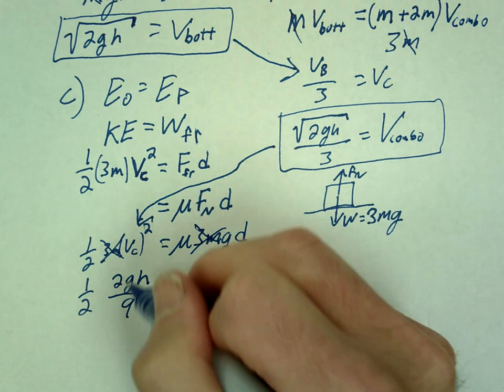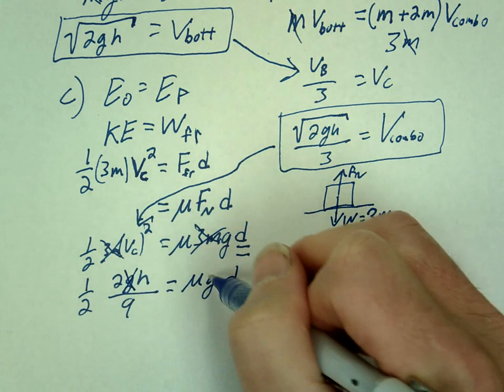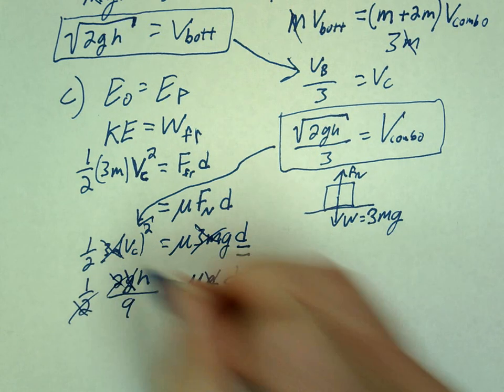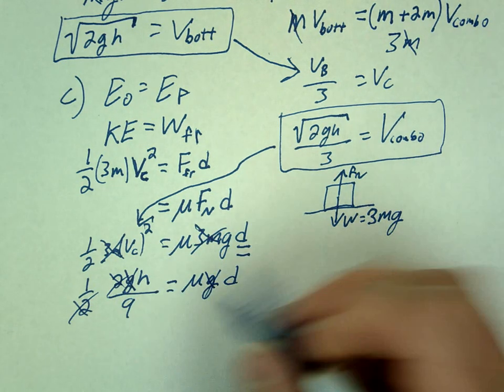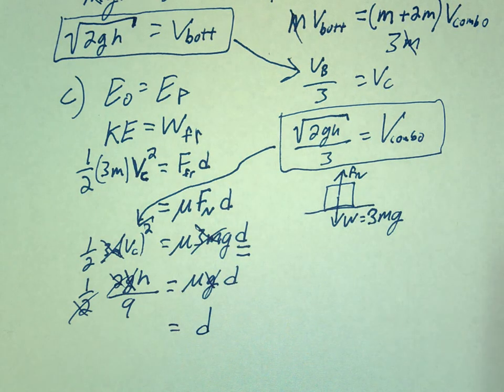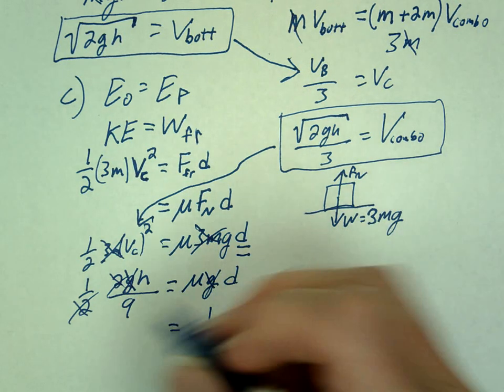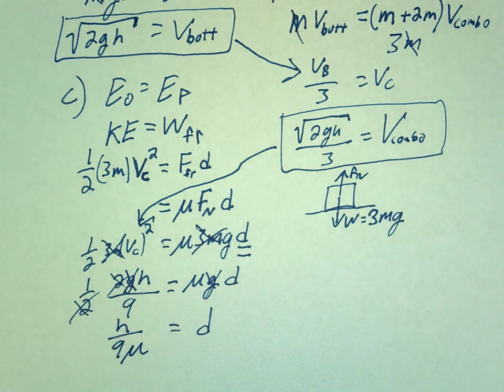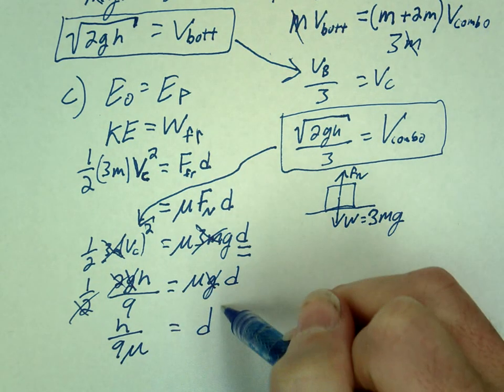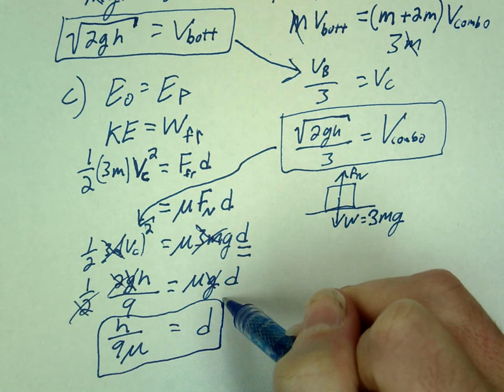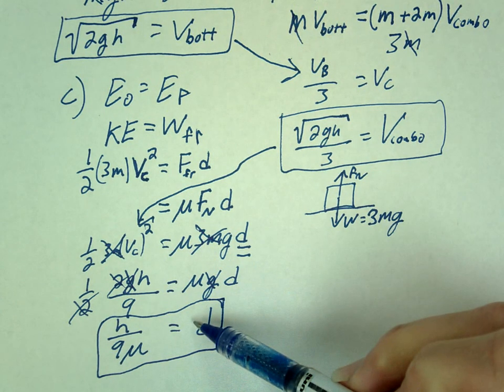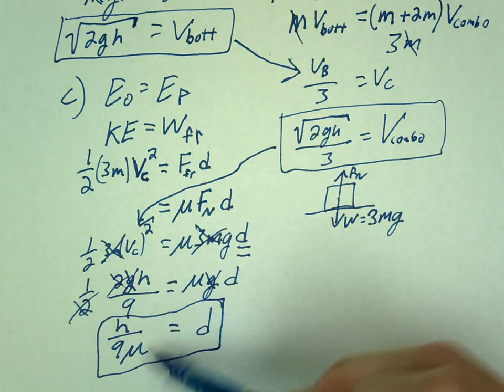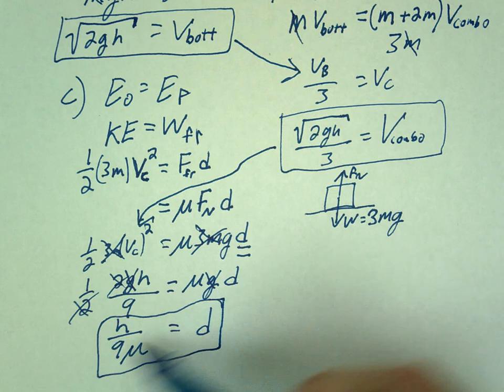And what are we left with? D equals h divided by 9 mu. Let's check our final allowed things. Are we allowed to use h? Yeah. Are we allowed to use mu? Yes. And any numbers are always good.